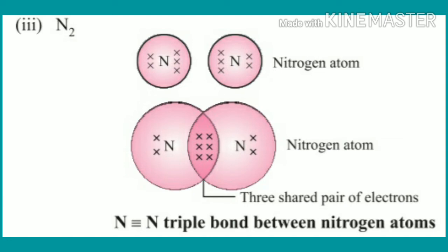To summarize: hydrogen forms a single bond — one shared pair of electrons. Oxygen forms a double bond — two shared pairs of electrons. Nitrogen forms a triple bond — three shared pairs of electrons. Remember these examples.